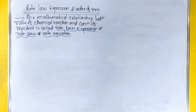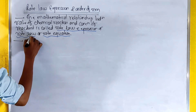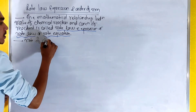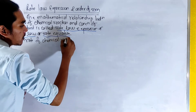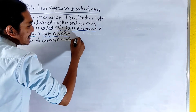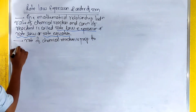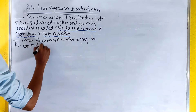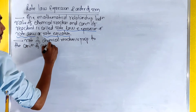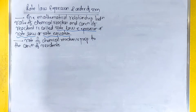Rate of chemical reaction is proportional to the concentration of reactants. That is, rate is directly proportional to concentration of reactants.